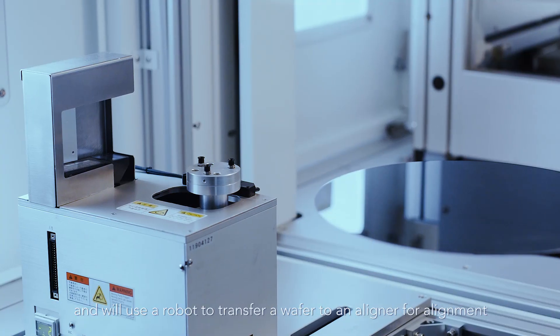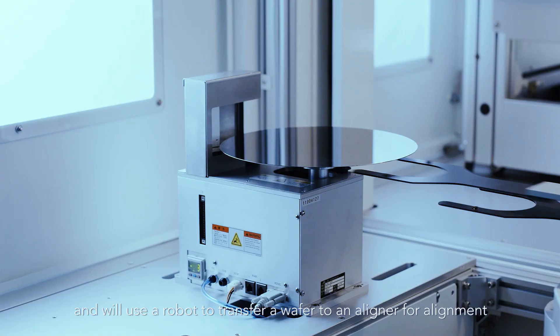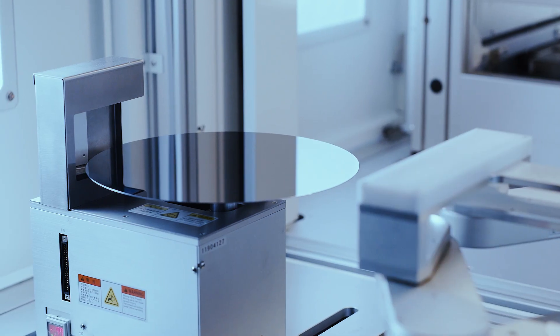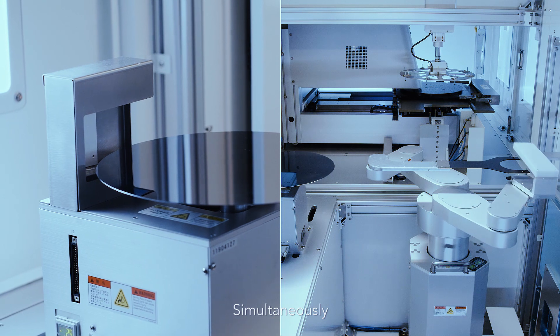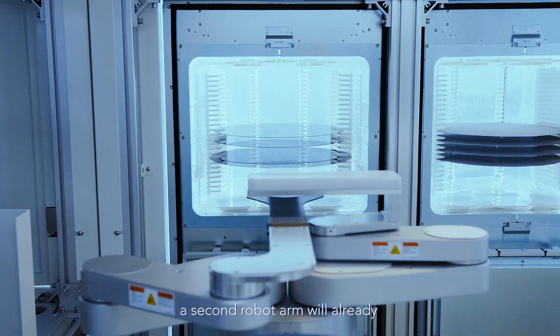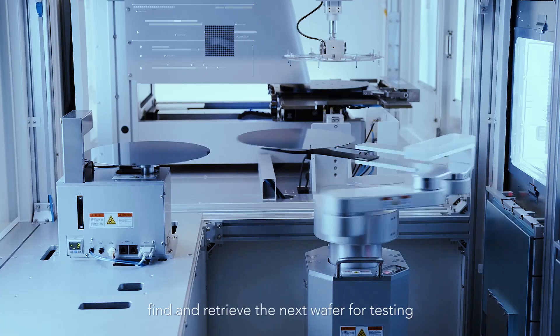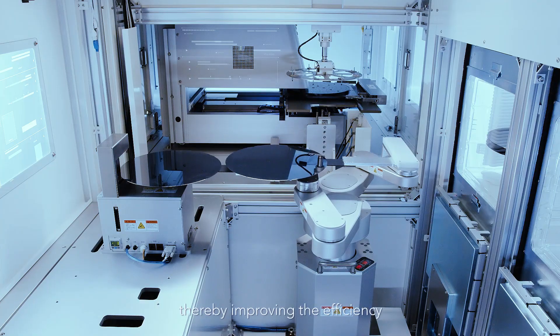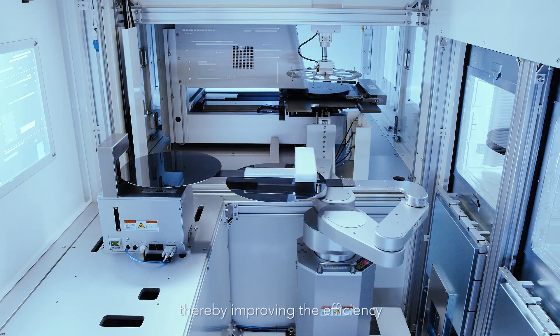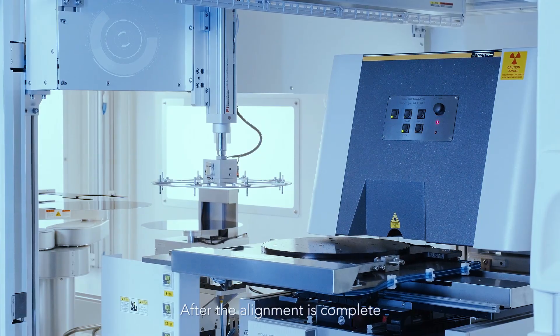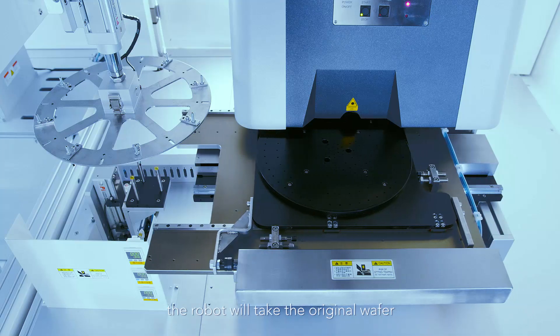A robot transfers a wafer to an aligner for alignment. Simultaneously, a second robot arm will already find and retrieve the next wafer for testing, thereby improving efficiency. After the alignment is complete, the robot will take the original wafer and place it on the table.